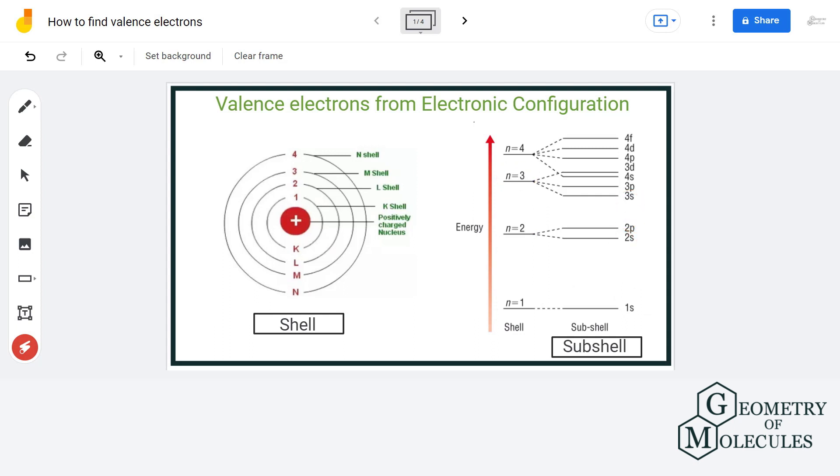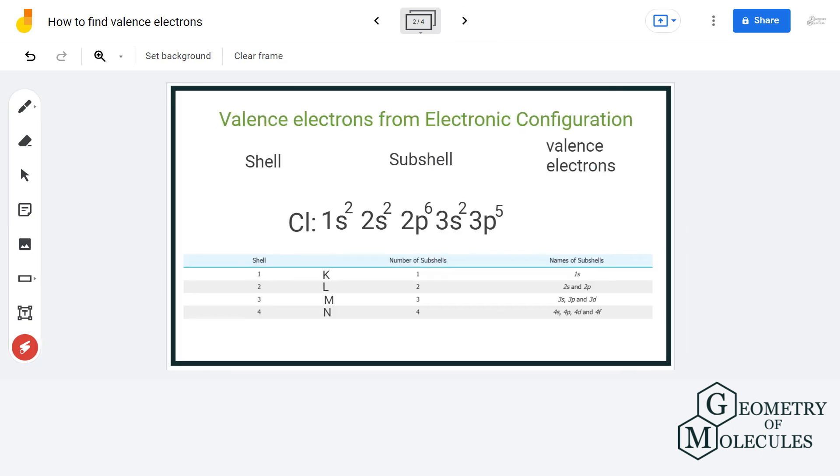And we know that the valence electrons are the electrons that are present in outermost shell. Now many students make a common mistake that they count the number of electrons in the subshell and write them down as number of valence electrons, which is incorrect.